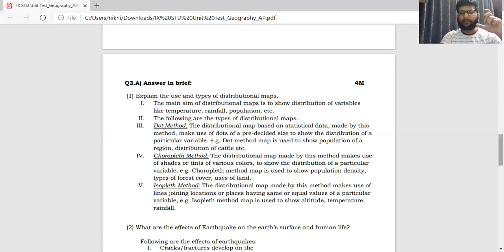The distribution map made by this method makes use of shades or tints of various colors to show the distribution of a particular variable. For example, choropleth method map is used to show the population density, the types of forest cover, the usage of lands. So over here, you find that one particular color is being utilized. You may also find that a same tint can be utilized. For example, you will find a blue color tint, the darker being on the higher side of that variable.